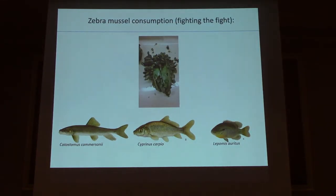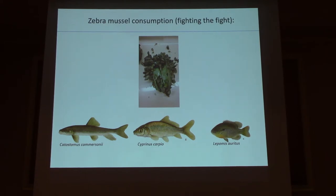Speaking of bivalves — yes, there are a lot of zebra mussels — and over the years, as a parasitologist looking at guts, we run into stomach contents. We can say at least three fish are fighting the fight: we've found zebra mussel shell fragments in white sucker, carp, and even red-breast sunfish. There are probably other species too, but at least these three are consuming zebra mussels.